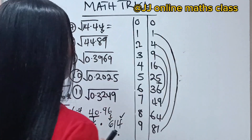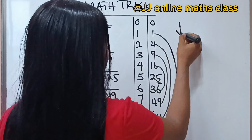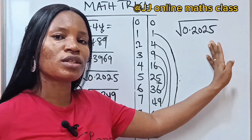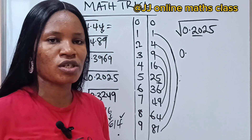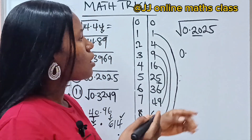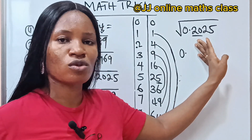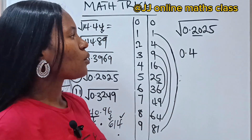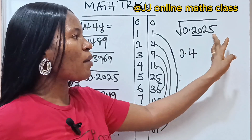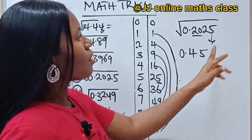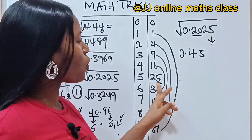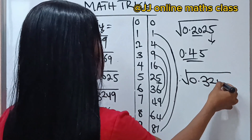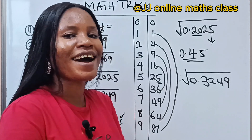The last example is square root of 0.2025. Since we have zero point, we write 0. and pick the next two digits, 20. What number squared is close to 20 but not more than 20? That's 4, because 4²=16. Now the last digit is 5 — remember, whenever the last digit is 5, the answer is always 5, since only 5 squared ends in 5. So our answer is 0.45. Now I'd like you to drop in the comments: what is the square root of 0.3249? Thank you for watching and have a lovely day!